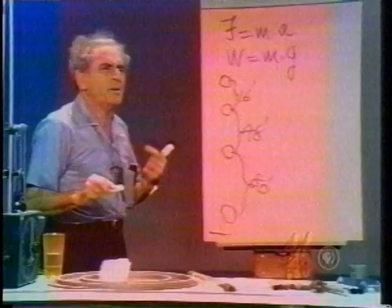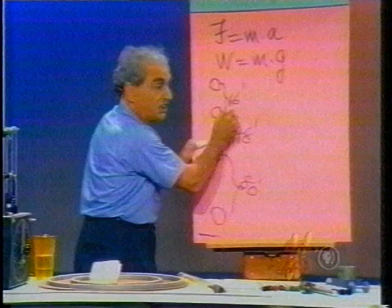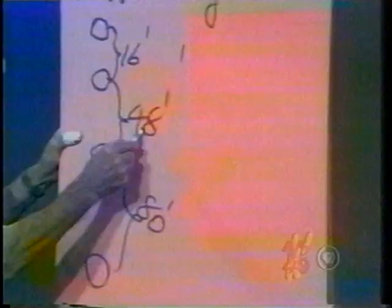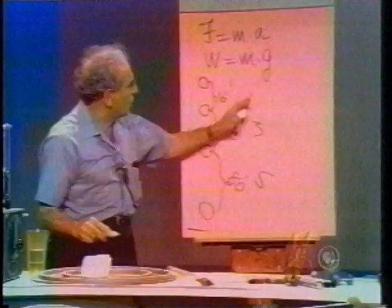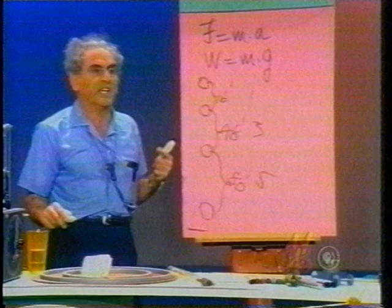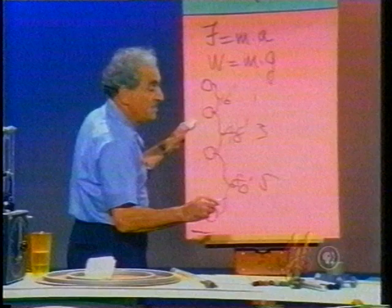These numbers have some mathematical enchantment. 16 divided by 16, 48 divided by 16, 80 divided by 16 — we see that the numbers are the odd numbers beginning with unity: 1, 3, 5. This is a discovery that Galileo made in the 16th century.